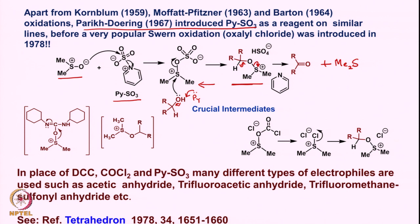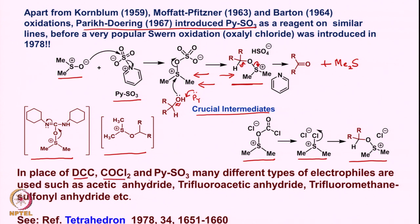Pyridine picks up the proton, generating the alkoxide which attacks onto this, forming the next intermediate. Pyridine is still present and picks up the proton, then oxidation takes place with loss of dimethyl sulfide. In place of DCC, phosgene, pyridine·SO₃, many different electrophiles are used such as acetic anhydride, trifluoroacetic anhydride, and trifluoromethane sulfonic anhydride.